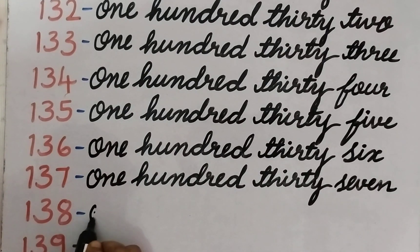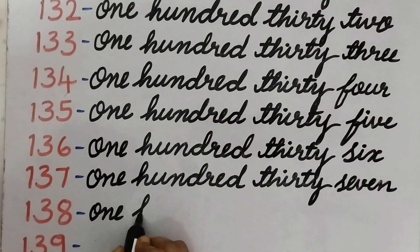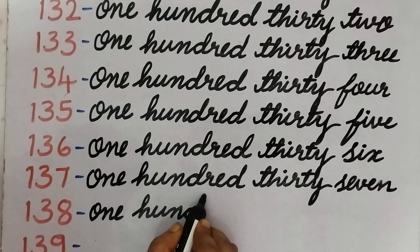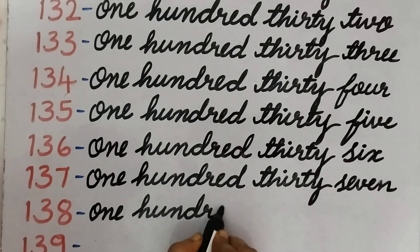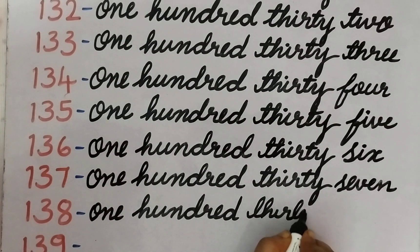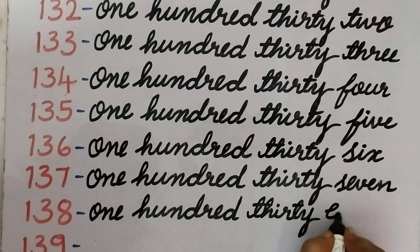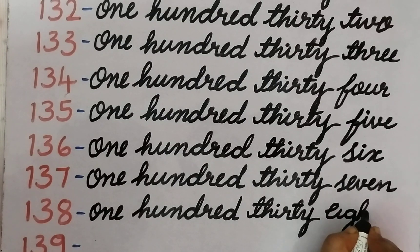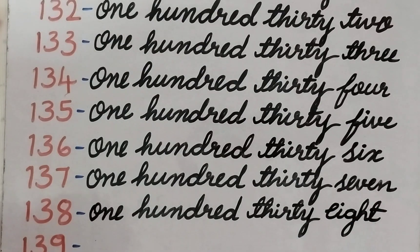138. O, N, E — 1. H, U, N, D, R, E, D — 100. T, H, I, R, T, Y — 38. E, I, G, H, T — 8.